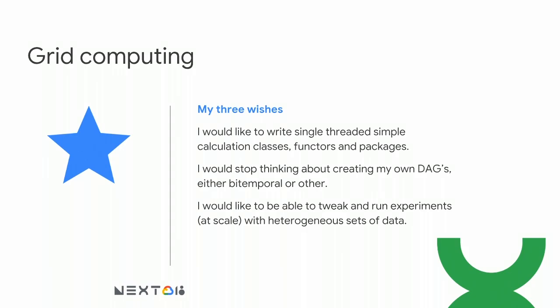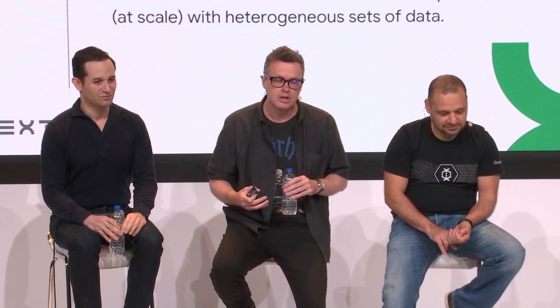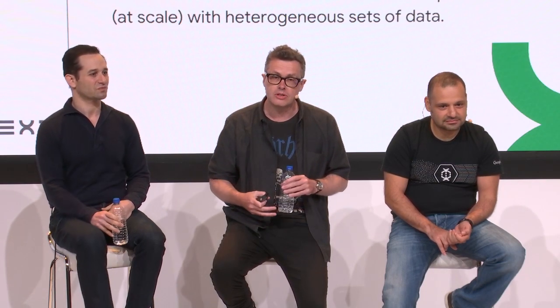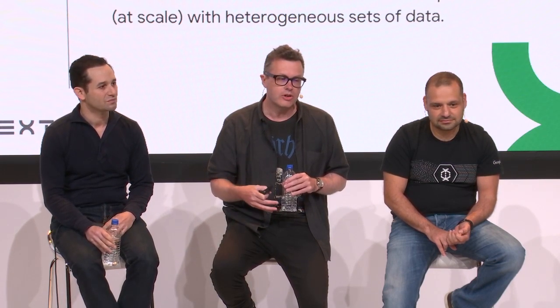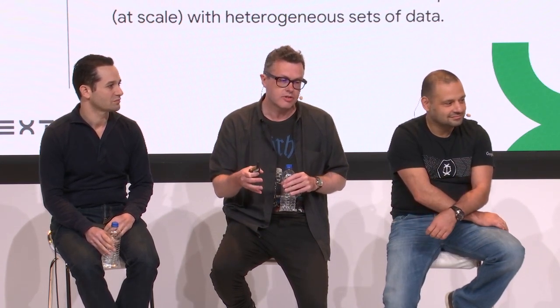As with most things in my life, I started with three wishes. When I approached Reza and we were discussing this — actually in a pub near Farringdon in London, as all good engineering projects in London are — I started writing down my user stories, and they became three wishes. I wanted to write single-threaded simple calculation classes, functors, or packages, without worrying about multi-threading. I wanted to stop thinking about creating my own directed acyclic graphs, bi-temporal or not — just focus on my IP and my analytics in a simple way.